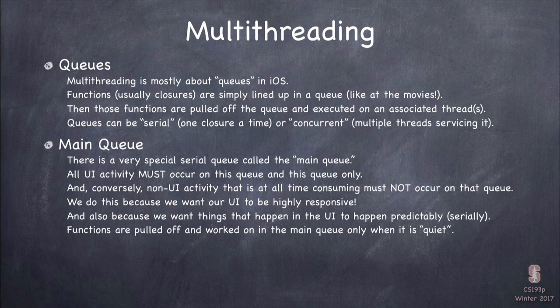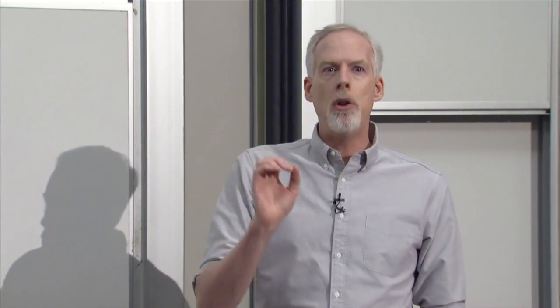One important queue is the main queue - this is the queue on which all UI activity is happening, and it's the only queue that UI activity can happen on. It's a serial queue: the blocks of code wait in line to run, there's only one thread to run them, and they're processed in order one at a time. What's great about the UI side of that is it makes it very predictable - you don't have to get into multi-threading mind games. All UI stuff is happening serially, so you never have to worry about two UI things accessing the same data structure at the same time.